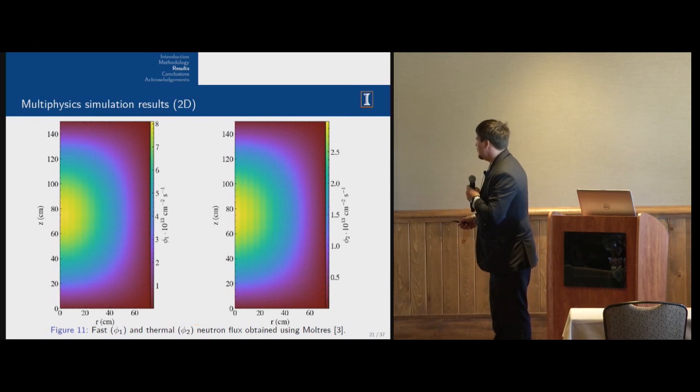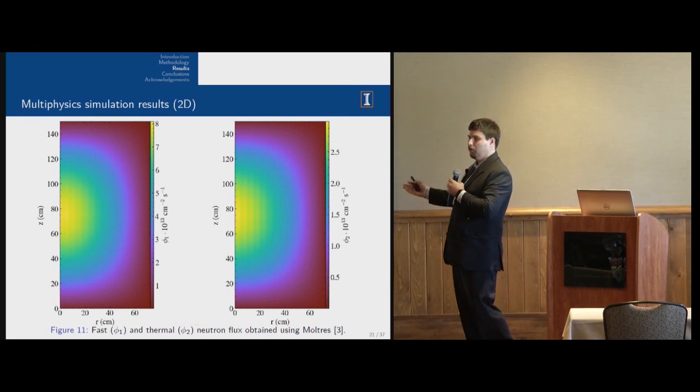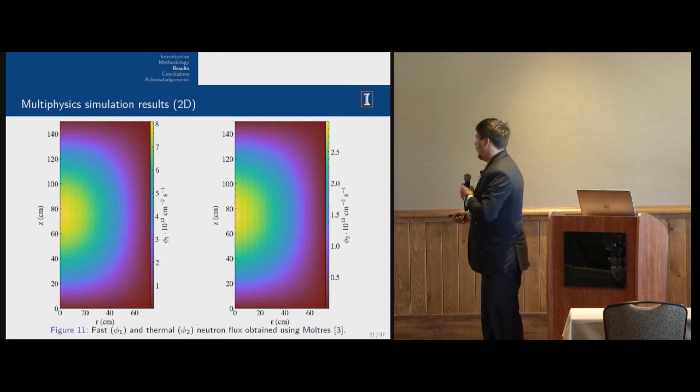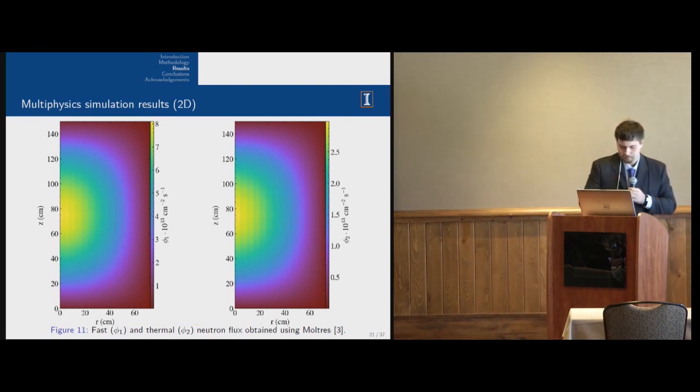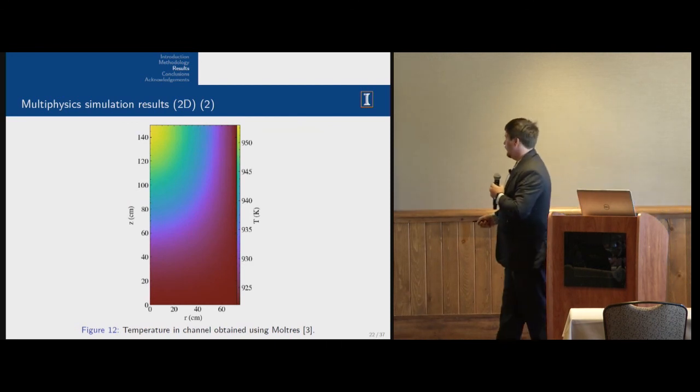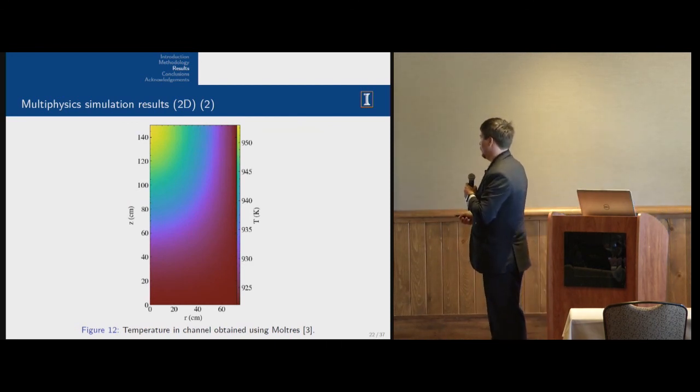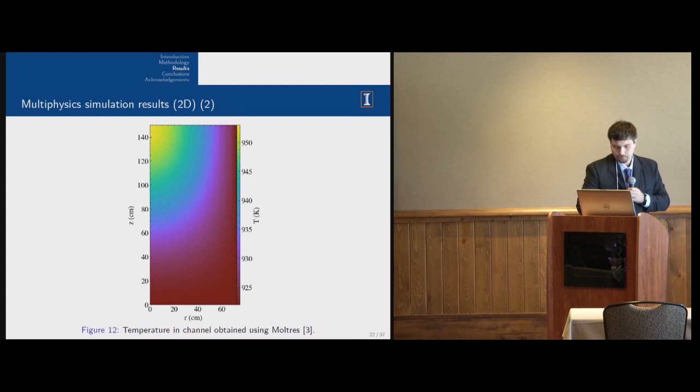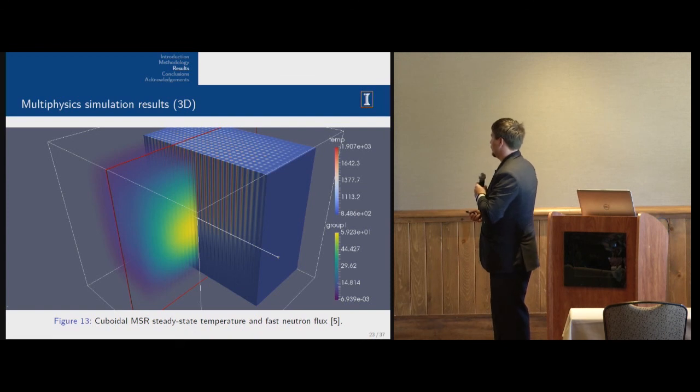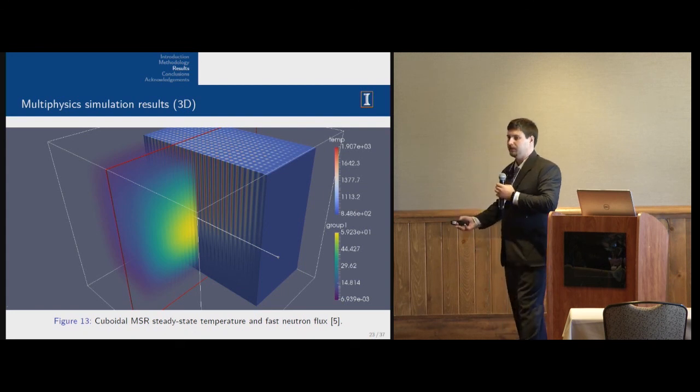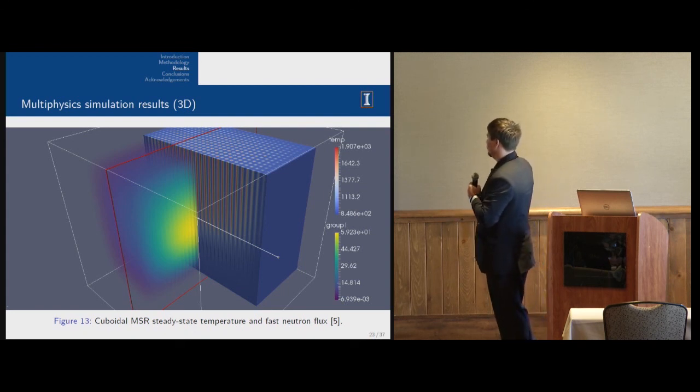There are results of our multi-physics simulation. There's fast and thermal spectrum. This is an axisymmetrical case. We have fuel salt moving from the bottom to the top. As you can see, most of the fission happens again in the center. There's temperature results. We have cold salt in the bottom and hot salt in the top. There's a demonstration 3D case. We used a cuboid molten salt reactor experiment model because we have some experimental data for this type of reactor. Thank you, Oak Ridge National Laboratory.